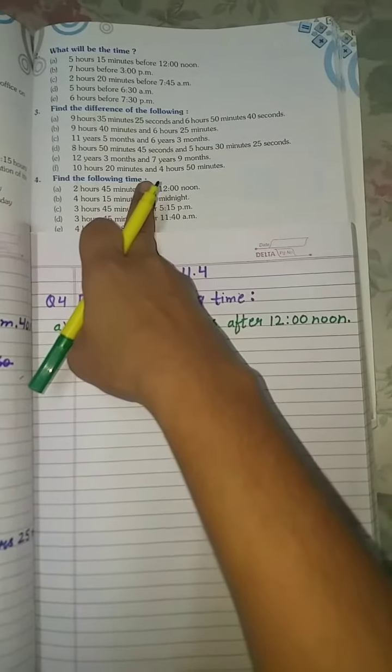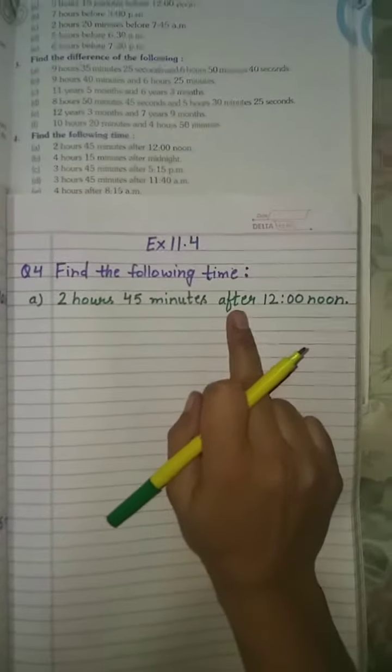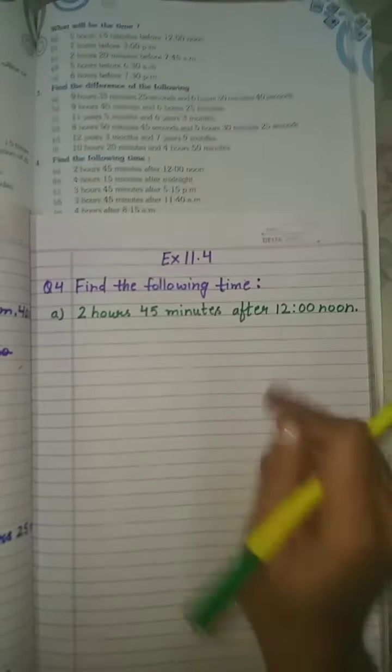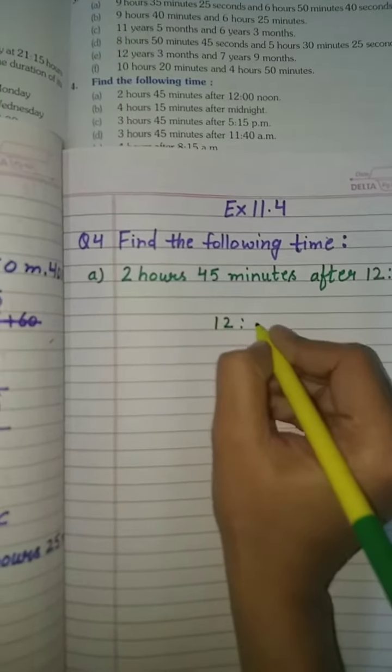Find the following time. How to find time after 12 noon? First we have to write down 12 noon.